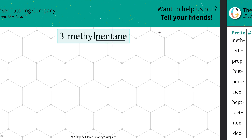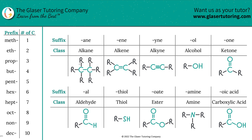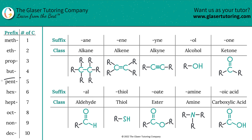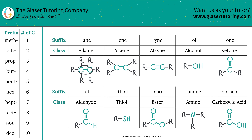We have to know what they mean, so let's take a look at some tables. The prefix pent represents five — in other words, five carbons. Then the suffix ane represents an alkane, and all an alkane is, is basically just some carbons single-bonded together.